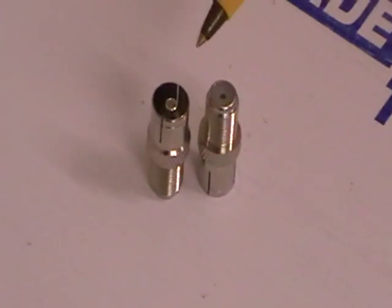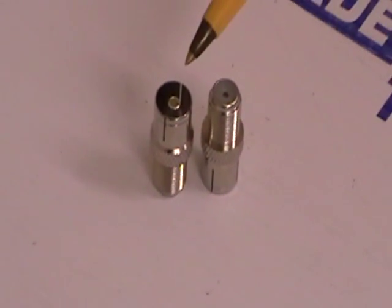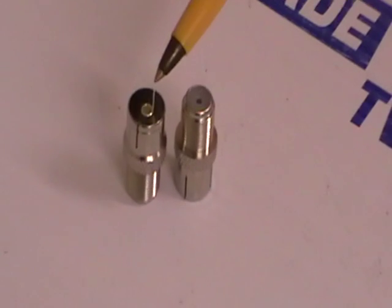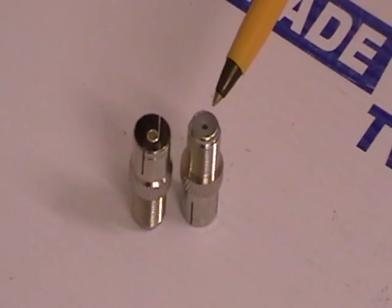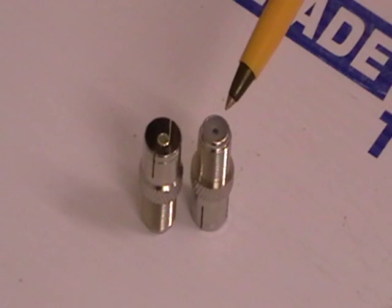I just have the two ends of it displayed here. On the left hand side we have the coaxial female input and on this other end we have an F type input.